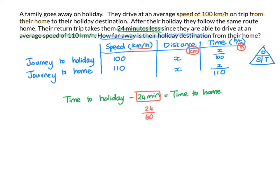Now, I can fill in the other values. The time to the holiday is X out of 100 minus. And my time to home is X out of 110.